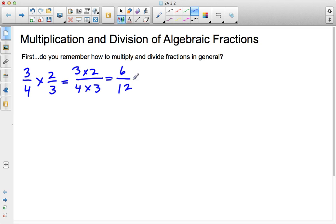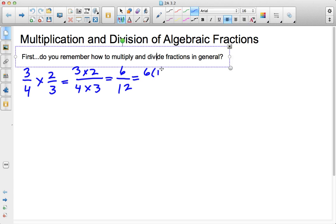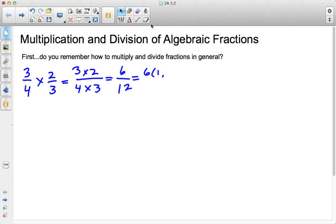Our answer, however, isn't in simplest form. So what we need to do is find the greatest common factor between 6 and 12 and factor that out. And the greatest common factor between the two is 6. So what happens is our 6s cancel out and we're left with our simplest form, which is 1 over 2.